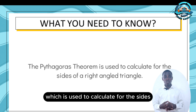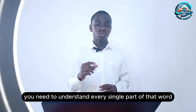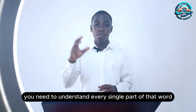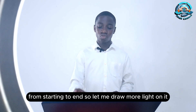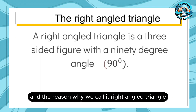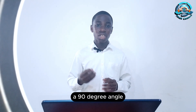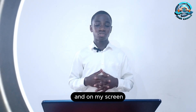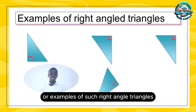What you need to know about the Pythagorean theorem is that it is a theorem used to calculate the size of a right-angled triangle. The key phrase is 'right-angled triangle' — you need to understand every single part of that because it is what we are going to be dealing with from start to end. The right-angled triangle has three sides, which makes it a triangle, and the reason why we call it 'right' is because it has a 90-degree angle.